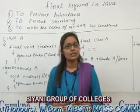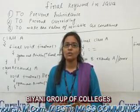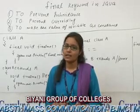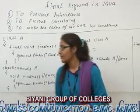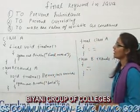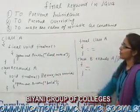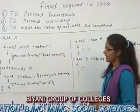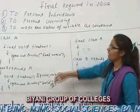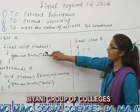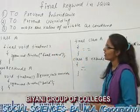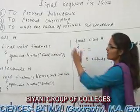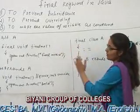Now let us see how we use the final keyword with methods. Here we have created a class A and we have created a final method — final void finalMe. This is a final method.